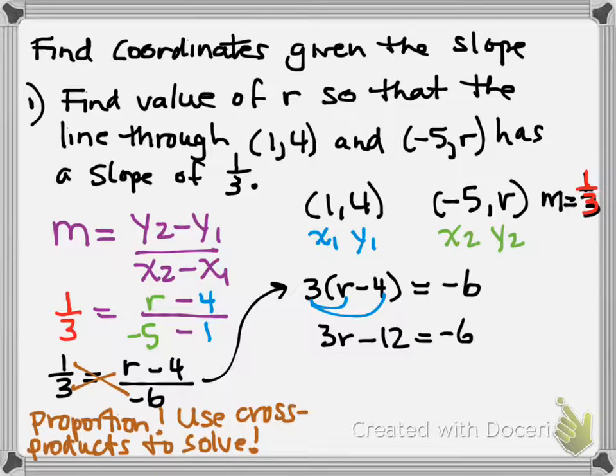Then I just solve out this simple equation. Next I would add 12 to both sides. I get 3r equals positive 6. Then I divide both sides by 3, and I get r equals 2.